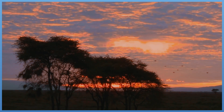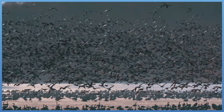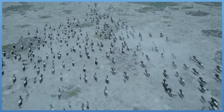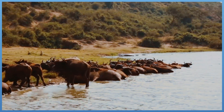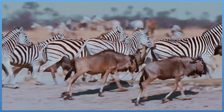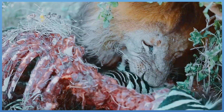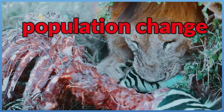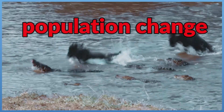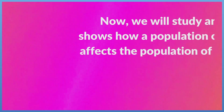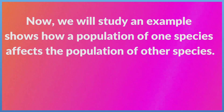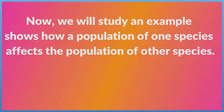In an ecosystem, all species depend on other species for survival. So an increase or decrease in one species affects the population of other species, causing a population change. We will now study an example that shows how the population of one species affects the population of other species.